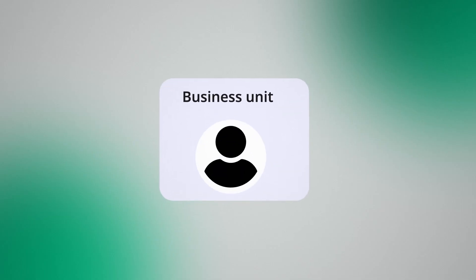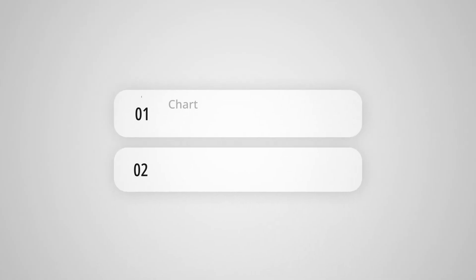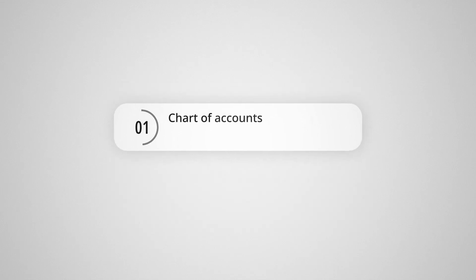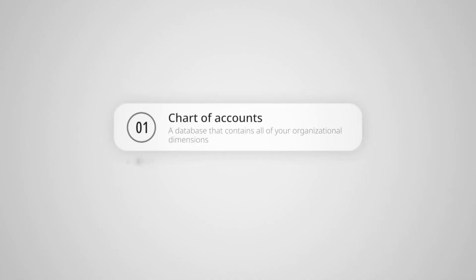The key thing to remember is that these are strategic choices tied to how decisions are being made. When a company decides to track by business unit, for example, they're usually also restructuring to put someone in charge of that business unit. The data structure then allows the company to evaluate how well that executive is doing their job.